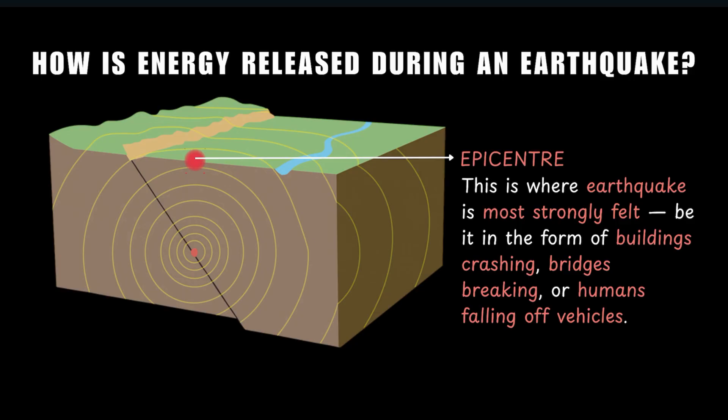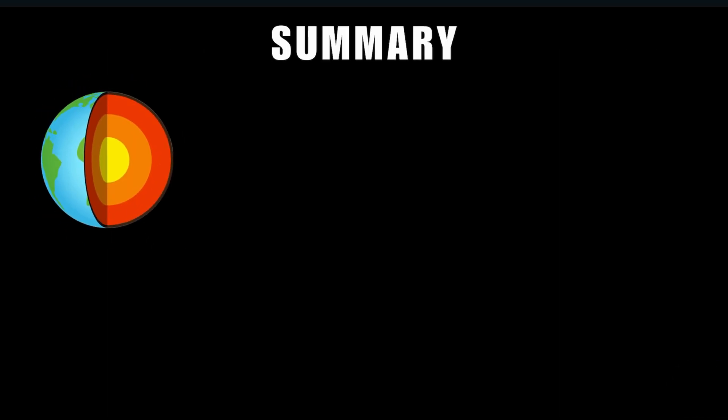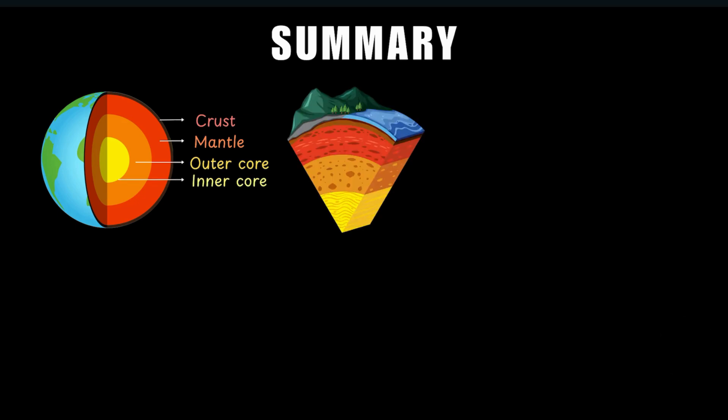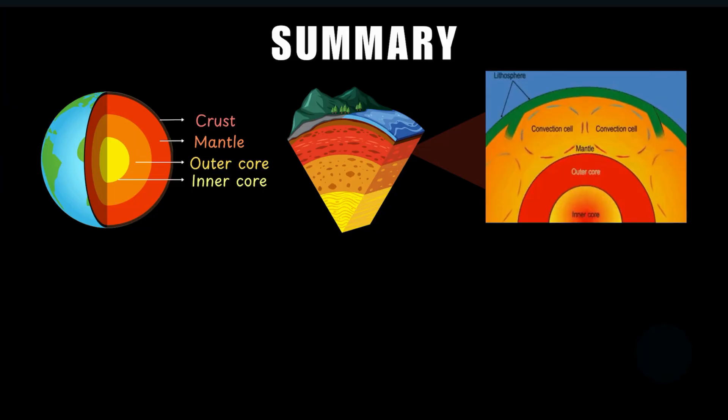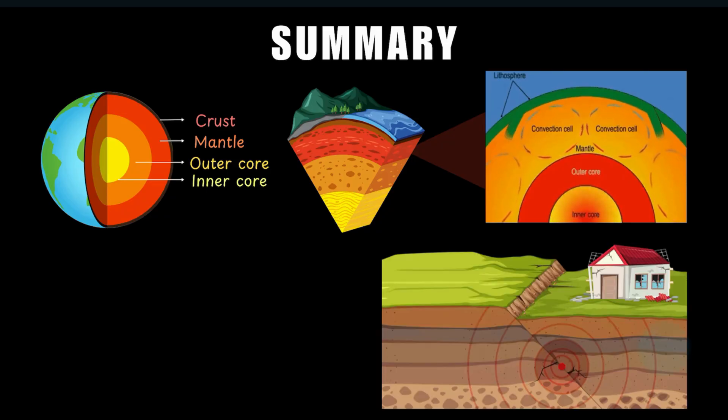So that's it about earthquakes. Now let's do a quick recap. The Earth is made up of four layers: the crust, the mantle, the outer core, and the inner core. Inside the hot mantle, there are convection currents that are going on continuously that make the Earth's tectonic plates move. When these plates get stuck, pressure builds up until it suddenly releases and that's an earthquake.